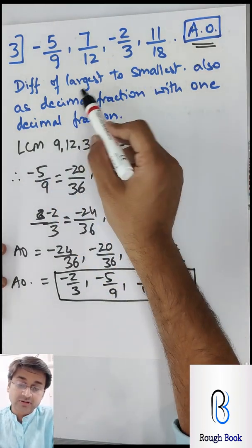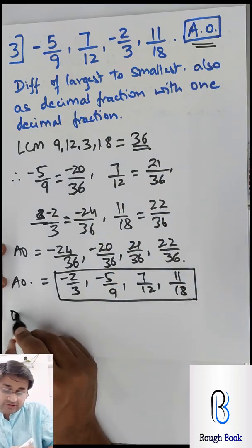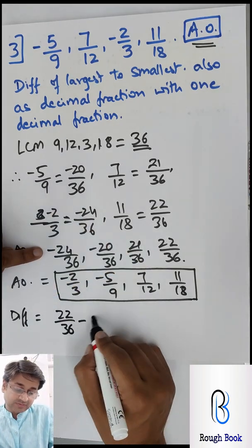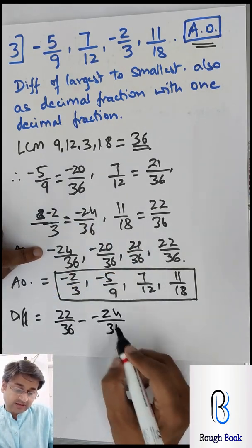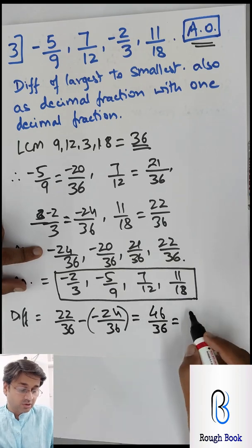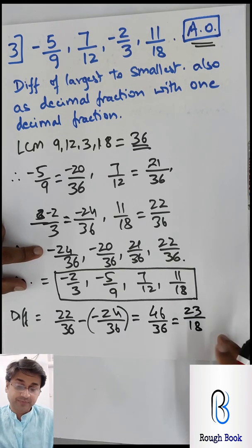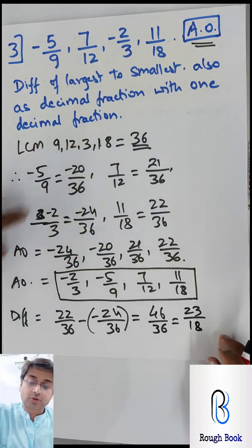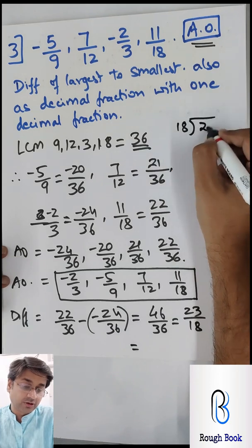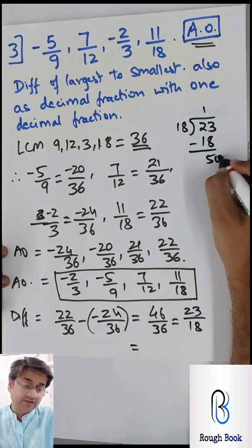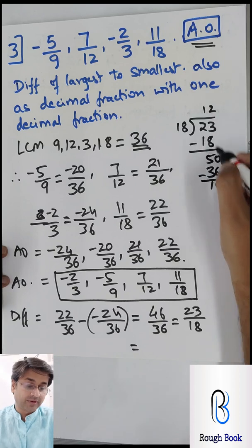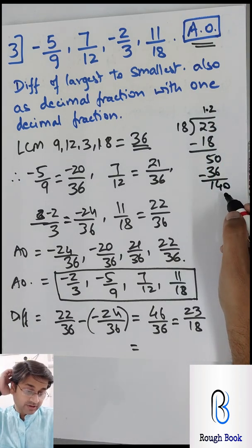Further they want to find out the difference of largest to the smallest. So difference of largest - so largest is 22 by 36 minus the smallest, so that is 24 by 36. So basically minus minus plus, so you add them: 46 by 36, which is going to be dividing by 2, so 23 by 18. They further want you to write in a decimal fraction up to 1 decimal place. So 18 divided by 23. Let's actually divide to see what do you get. So 1 times 18, 550, so 2 times 36, 140. So I guess I'll have to put a decimal here when I got a 0. So now 18.